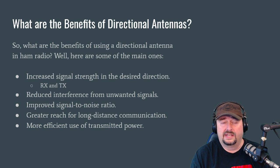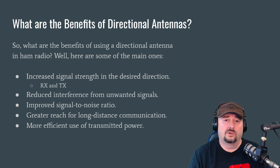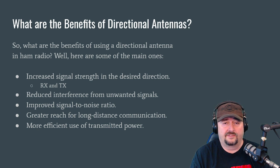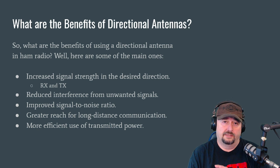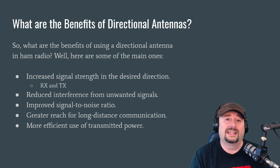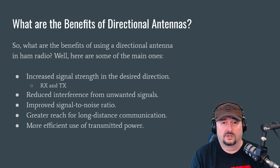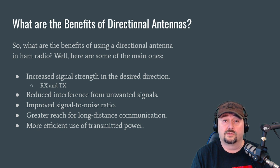This is going to improve our signal-to-noise ratio. If you operate HF, you'll notice something called a noise floor — general atmospheric noise, interference noise, and noise your radio picks up. If you eliminate this on the backside and sides of your antenna and focus only on what's in front of you, you'll pick up less noise. Any incoming signal will be stronger relative to your noise floor, thus improving your signal-to-noise ratio.